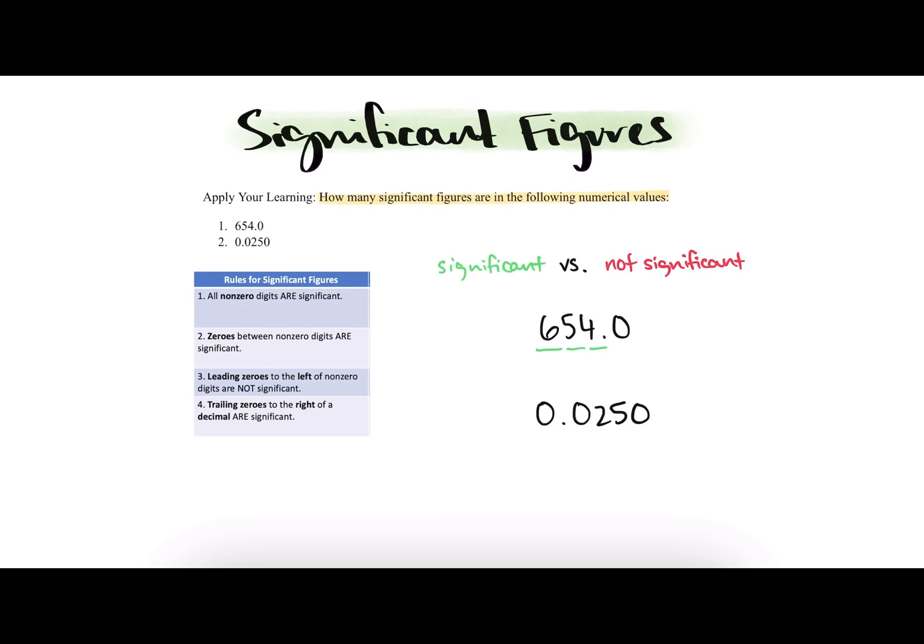However, our next digit is a zero. And so we'll have to look to the next rules to see if that is significant or not. So it doesn't apply to rule number one. Rule number two says zeros between non-zero digits are significant, so it doesn't apply there. Three says leading zeros to the left of non-zero digits are not significant, but our zero is to the right, so that doesn't apply either. But rule number four says trailing zeros to the right of a decimal are significant. So our zero comes right after a decimal point, so it's called a trailing zero and it does apply. So number four does apply to our zero and it says that it is a significant figure.